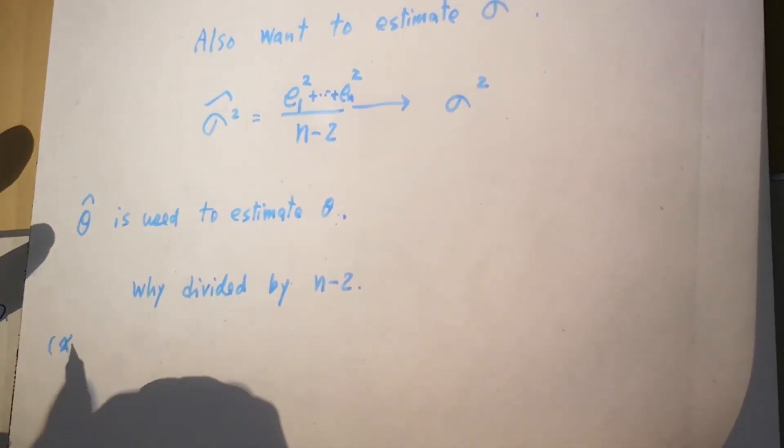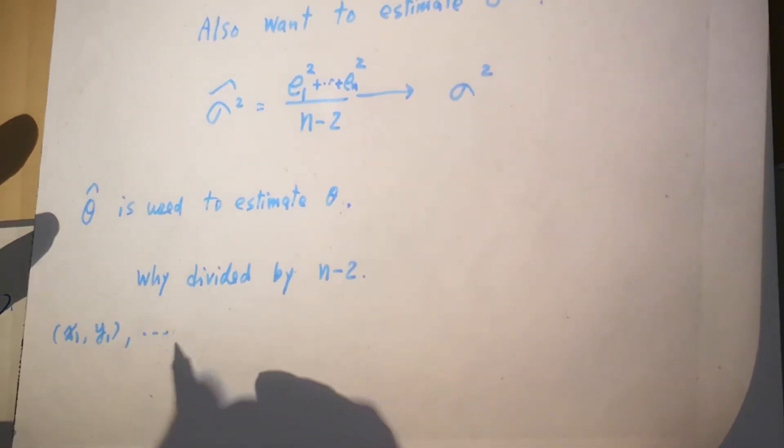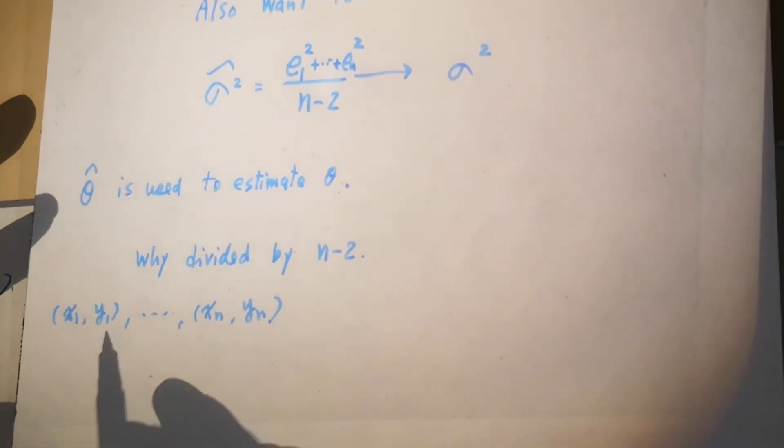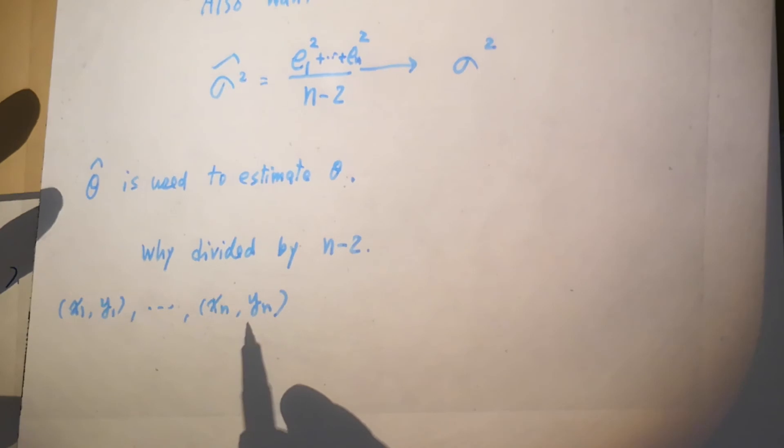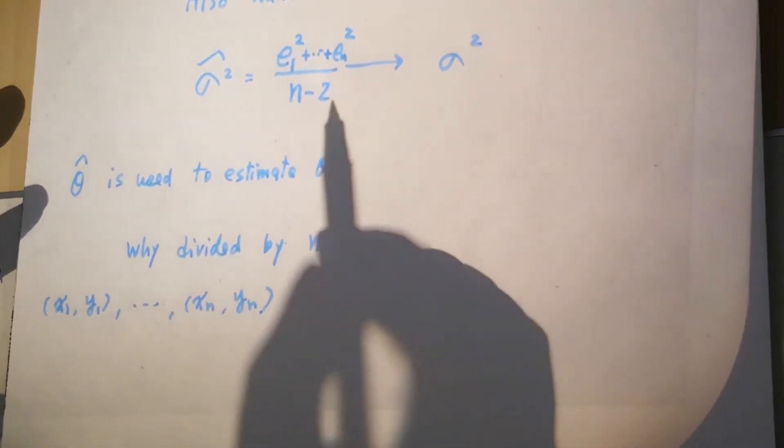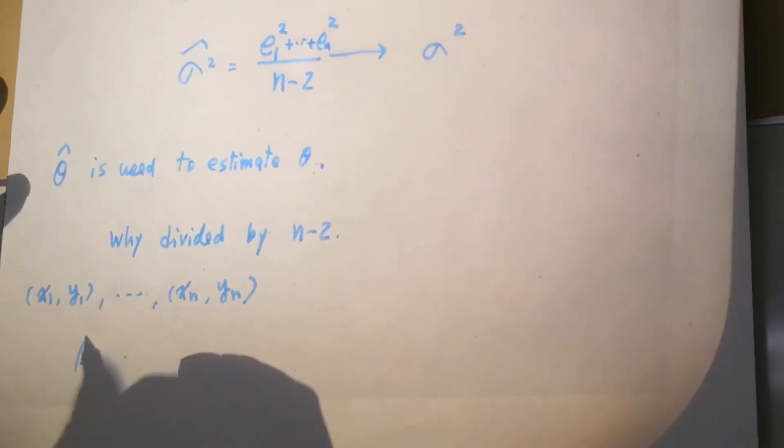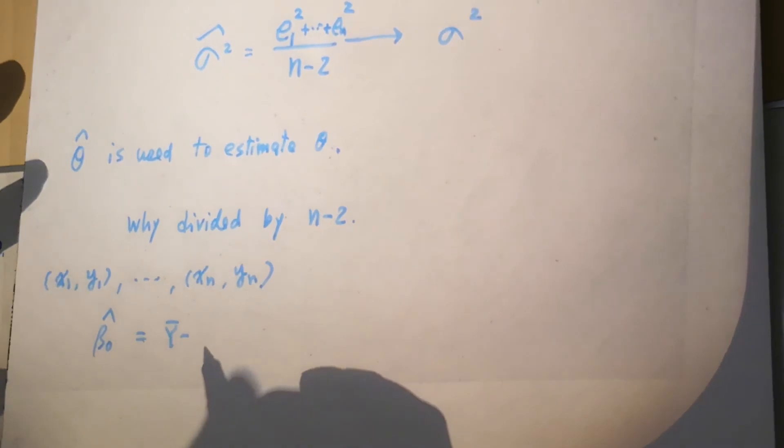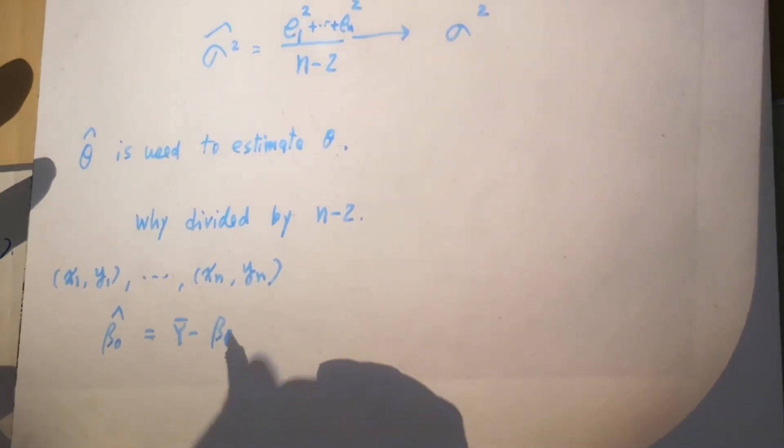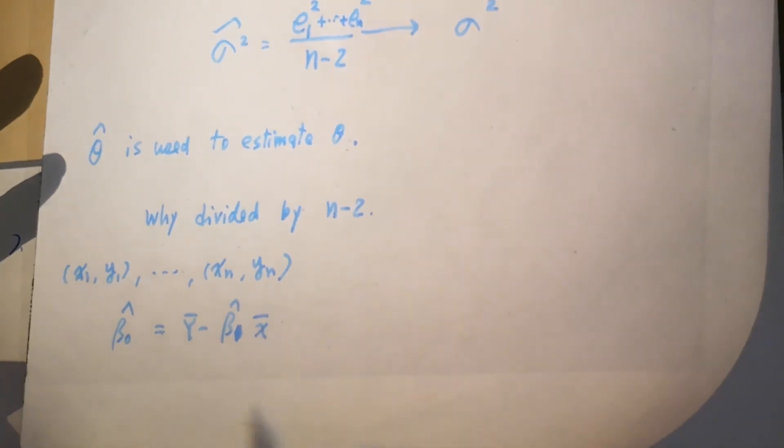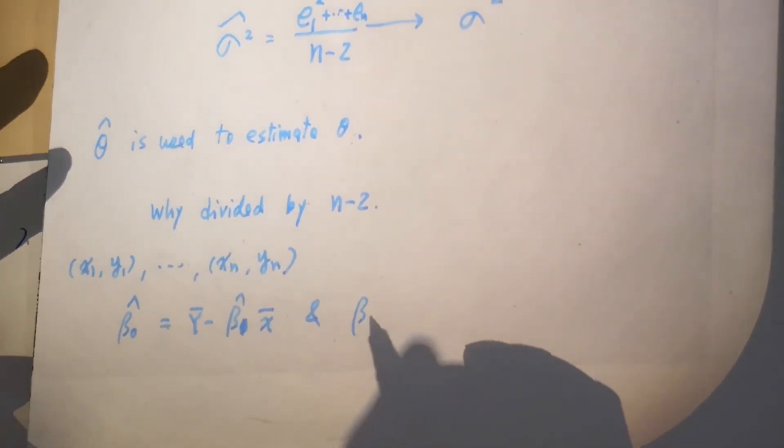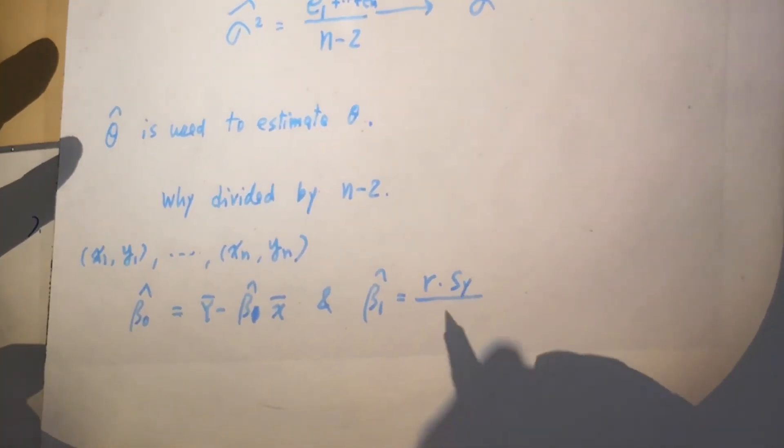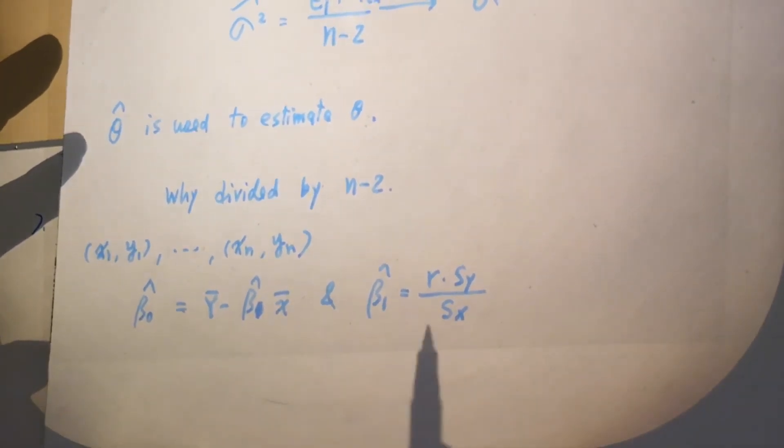I give you a dataset: (x₁, y₁) all the way up to (xₙ, yₙ). Y₁ to Yₙ have n degrees of freedom. However, you lost two degrees of freedom. First, β̂₀ is ȳ minus β̂₁x̄. Second, β̂₁ is R times standard deviation of y over standard deviation of x. You have two constraints.